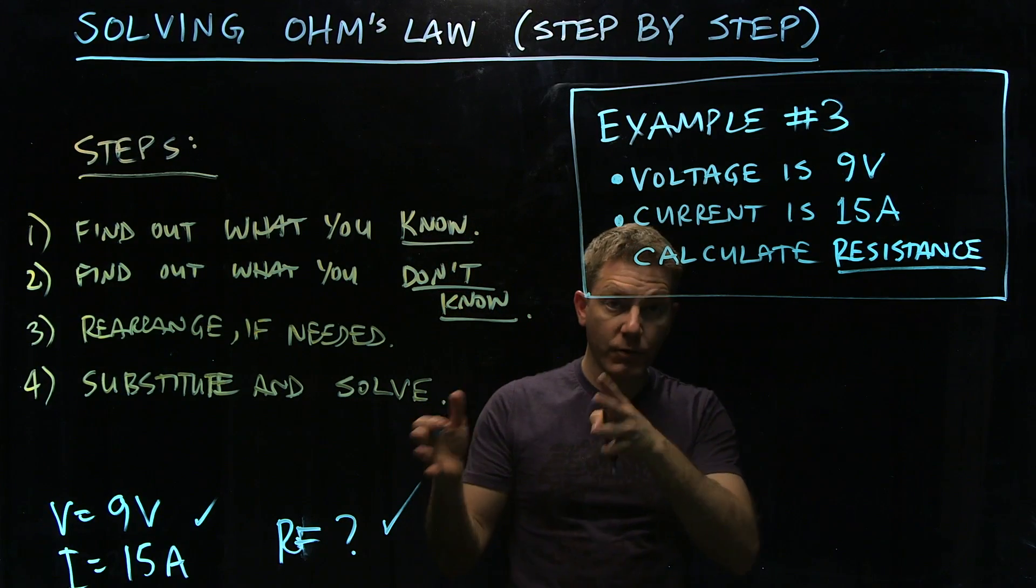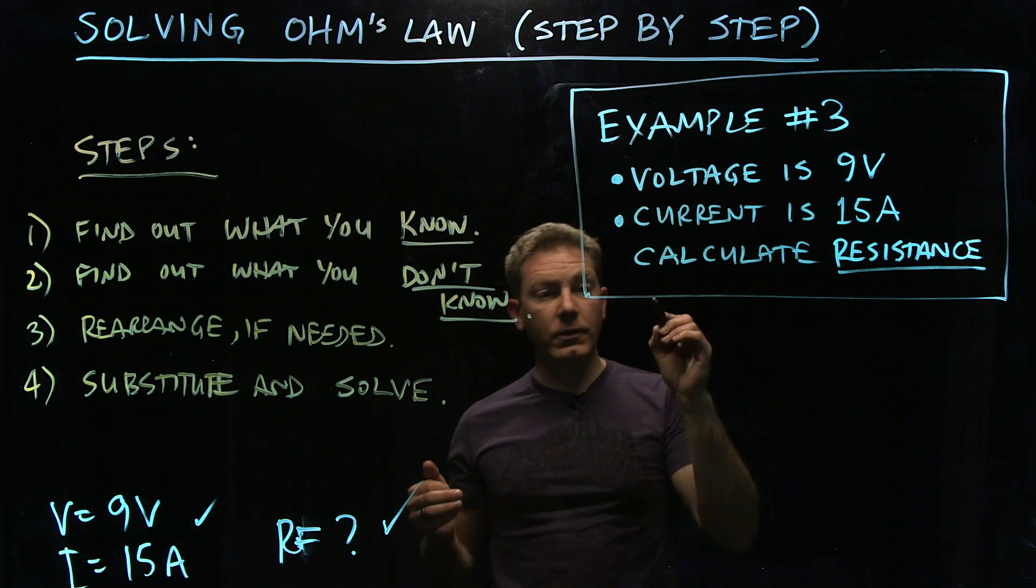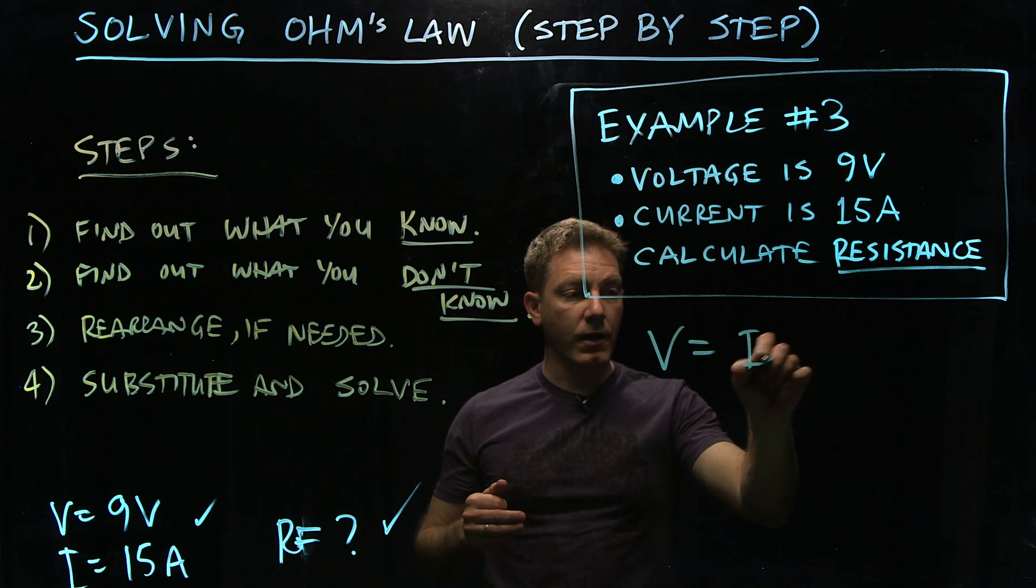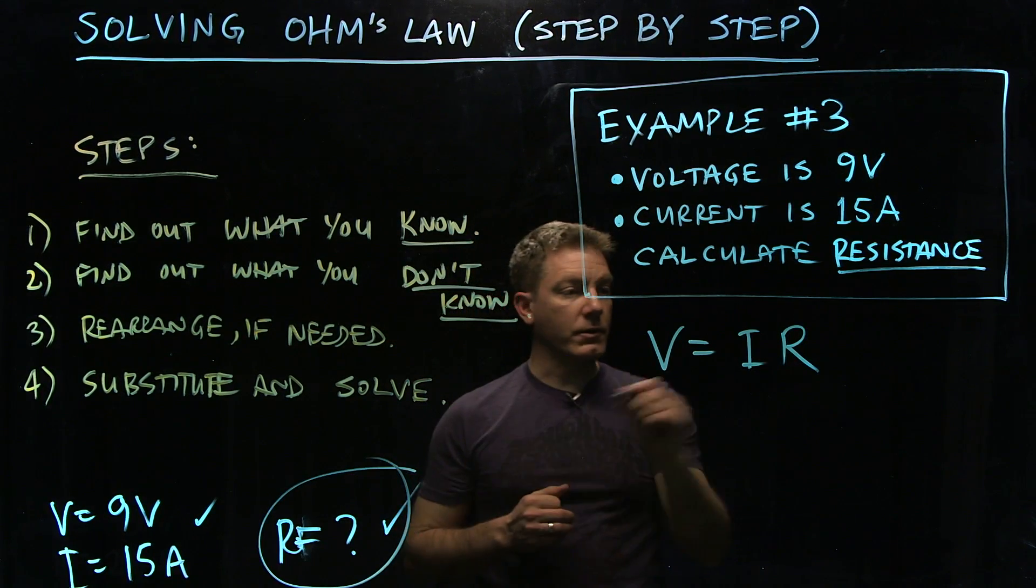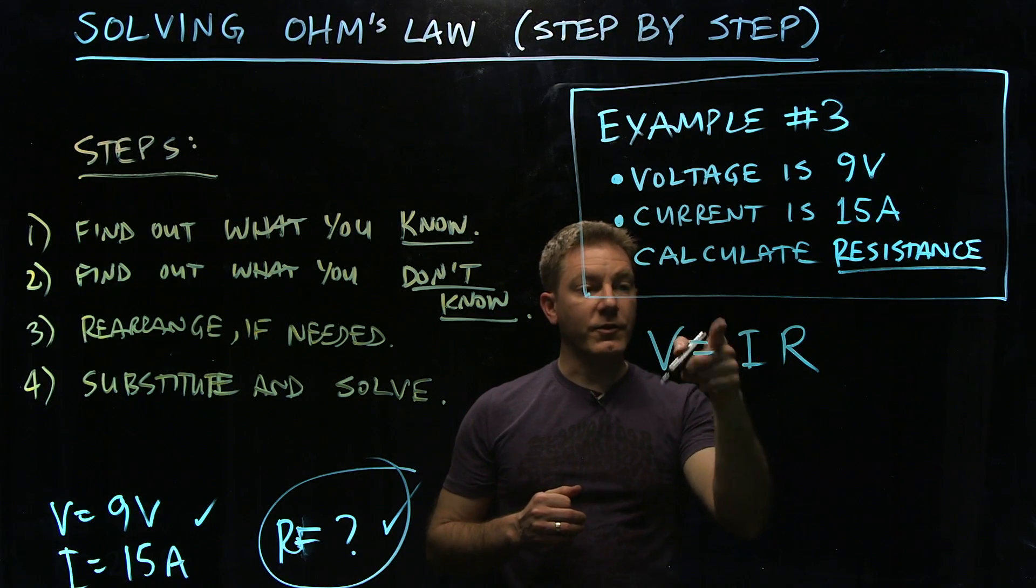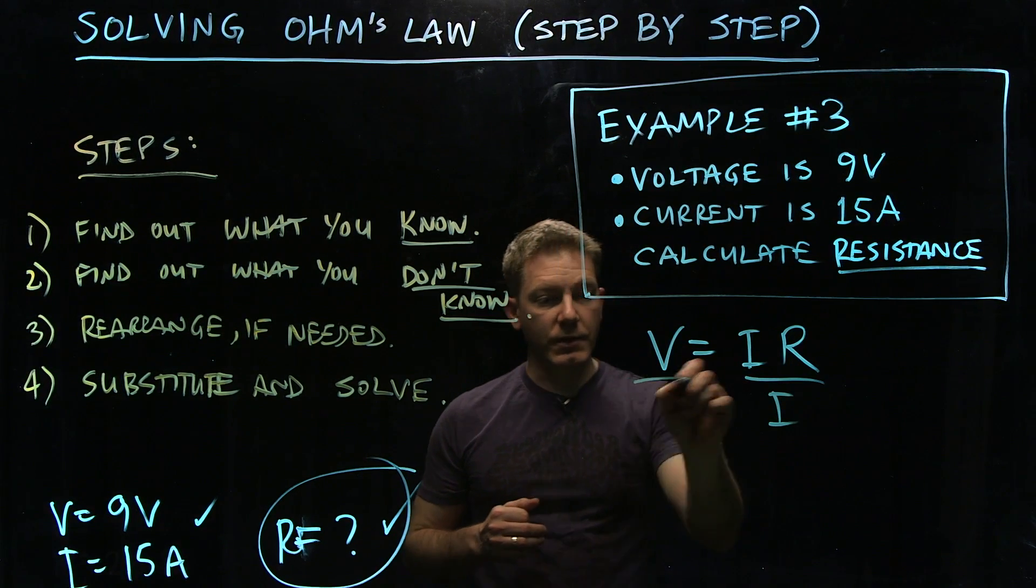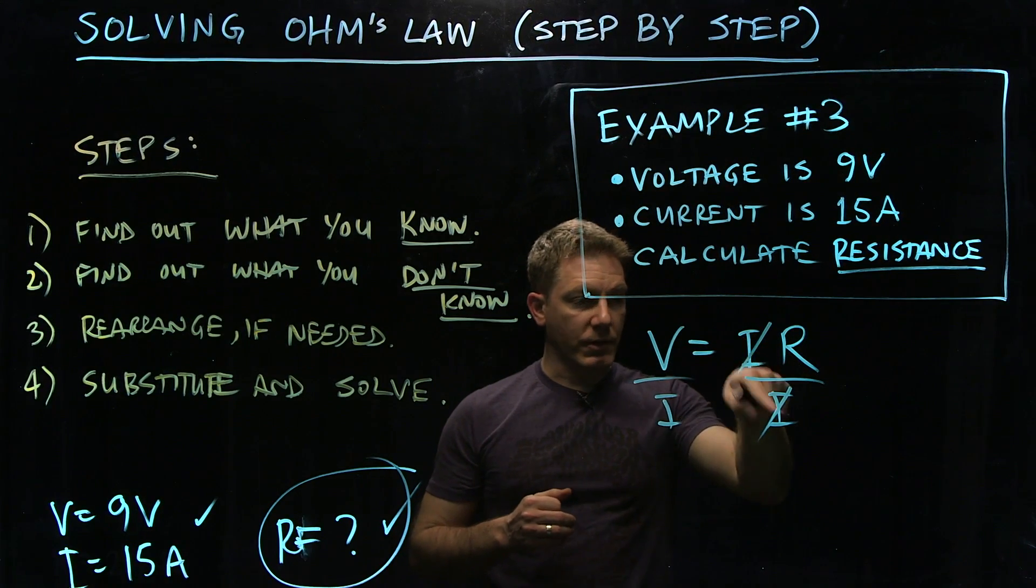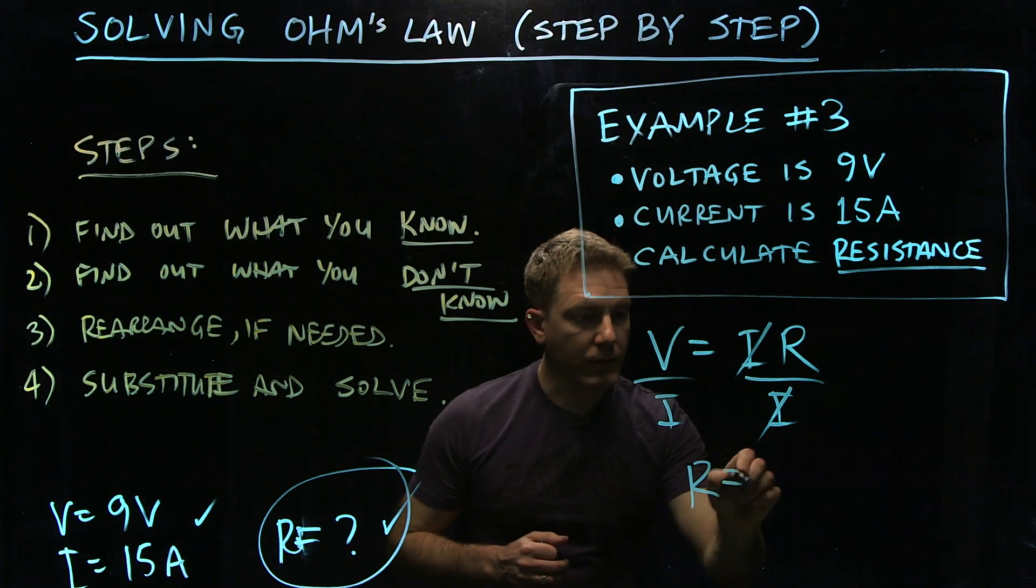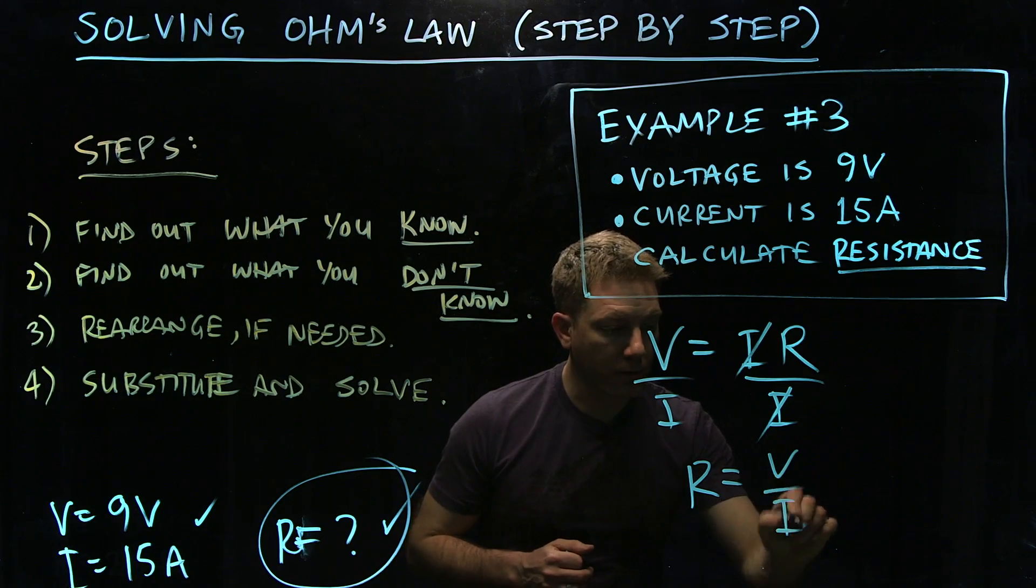You want what you don't know on the left side, you want what you do know on the right side, so we start with V equals IR. And what don't we know? R. So we want R by itself, so we have to get I out of there, so we divide both sides by I. So V over I equals R times I over I, which is 1, so R equals V over I.